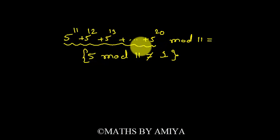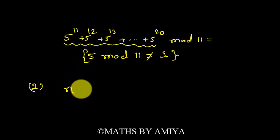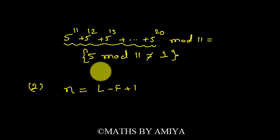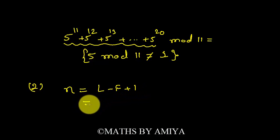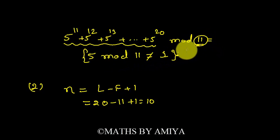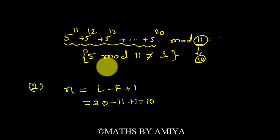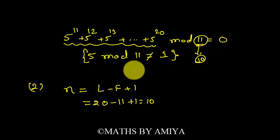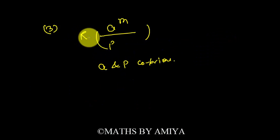Concept number two: how do we find the total number of terms when we write consecutive numbers? The total number of terms is the last term minus the first term plus one. This is derived from the AP formula. So: last term 20 minus first term 11, plus 1 = 10. There are ten terms. Since 11 is prime, 5 mod 11 is not one, and p minus one is ten. Since total terms equals p minus one, the remainder is zero.